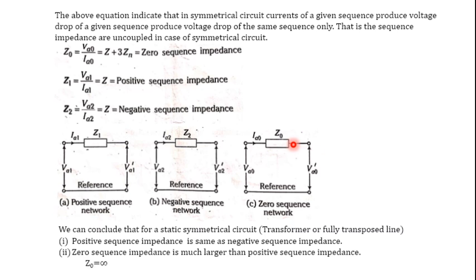For a static symmetrical circuit — such as a transformer or a fully transposed transmission line — the positive sequence impedance is the same as the negative sequence impedance. However, the zero sequence impedance is very large compared to the positive sequence impedance. If there is no neutral connection, Z0 becomes infinite. That is why the neutral plays an important role when dealing with zero sequence impedance, voltage, and current.